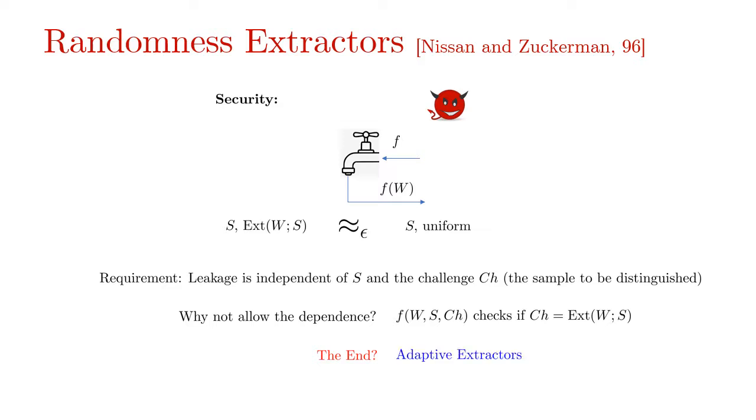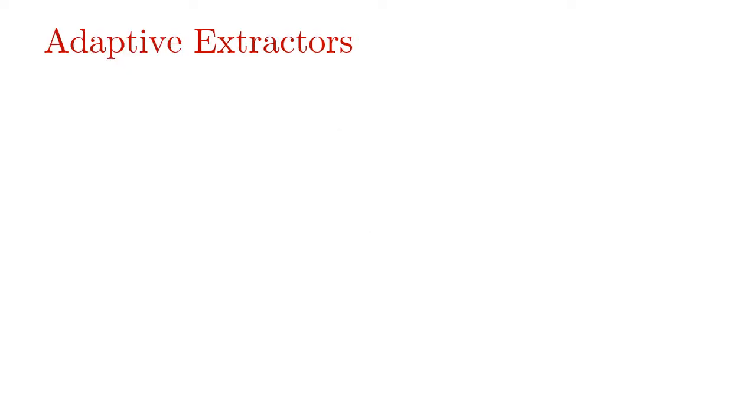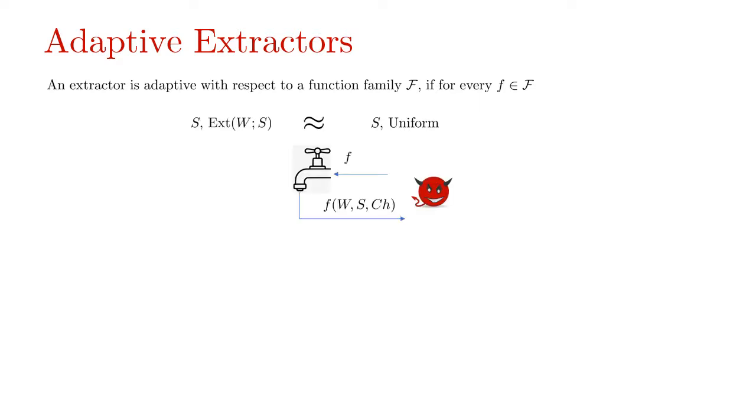Well in this work we demonstrate that this is not the end of the story by introducing adaptive extractors. We say an extractor is adaptive with respect to a leakage family script F if for every function F in the family the extractor output looks indistinguishable from uniform even given the seed and the adaptive leakage on F that is the output of F on W, S and the challenge.